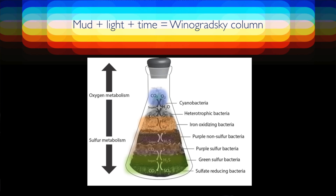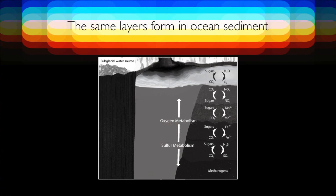The ones at the top are kind of like, what's your problem? Oxygen is great, but the bottom ones won't try it — they're picky eaters. They like to eat the stinky stuff; they like to eat sulfur and other things. So the real driving force in a Winogradsky column is oxygen metabolism versus sulfur metabolism. And you see the same thing at the bottom of the ocean — sulfur metabolism at the bottom, oxygen metabolism at the top.